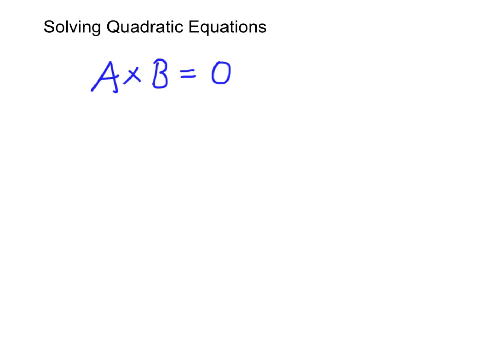This will be rather obvious, because we can have either a equals zero or b equals zero. This is simply because if we have one zero for one number, then the product of zero and the other number will always be zero. And this applies to b also — if b is zero, then a times b will always be zero.